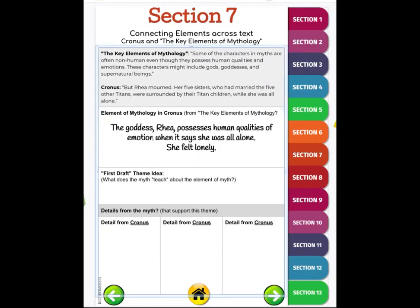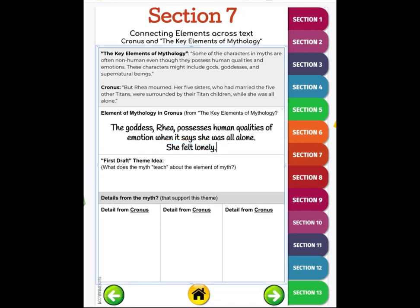We can figure out that the key element is that the goddess Rhea possesses human qualities of emotion. We're talking about these human qualities even though she's non-human, she's a goddess. When it says she was all alone, I basically just reworded that and said she felt lonely. I'm trying to think what does my theme mean, what does this myth Cronus teach us about the element of myth.